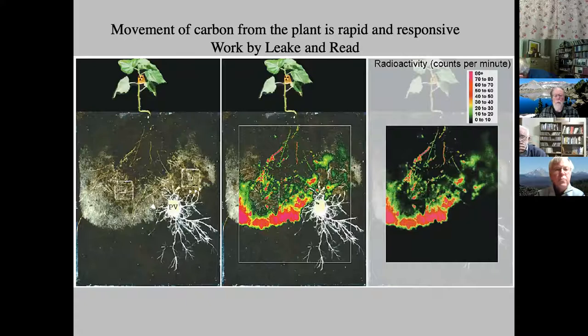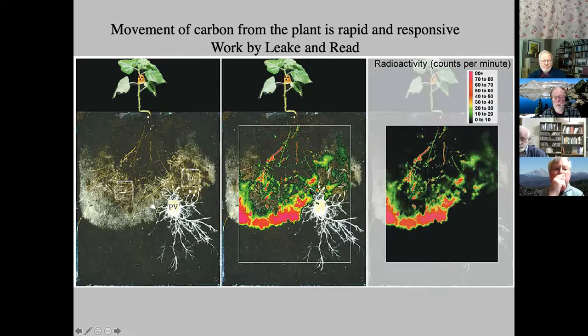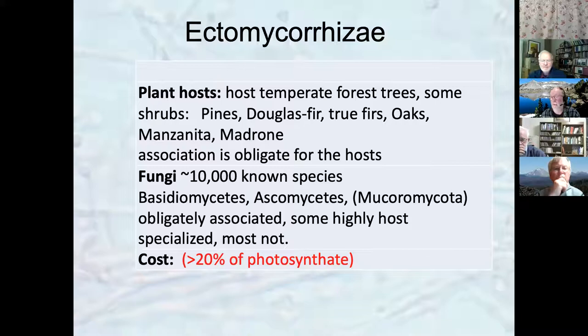Regarding the flow of carbon, Leake and Read's group in Sheffield, England, used neat microcosms where they grew a little birch tree and labeled it with radioactive C14. They can watch the pulse of radioactivity in real time and see where it goes. What you see is that the fungal mycelium fringe — not root, but the active mycorrhizal fungi — is expanding, and in less than 24 hours after labeling, almost all of the label is right at the front of that expanding mycelial edge.